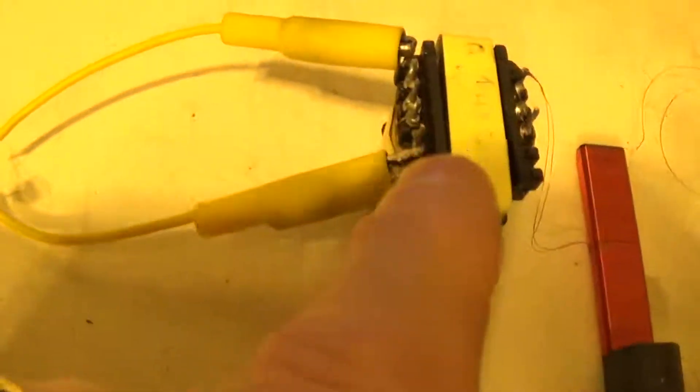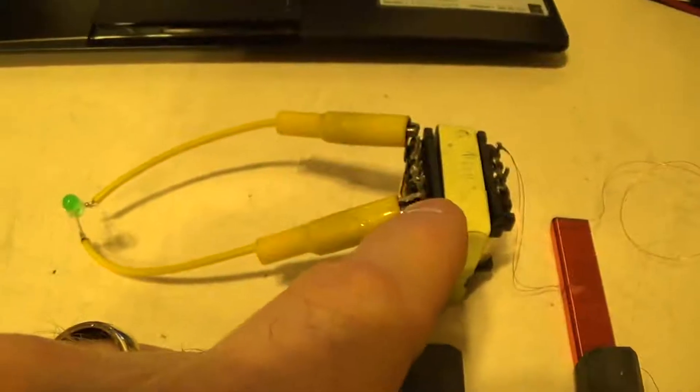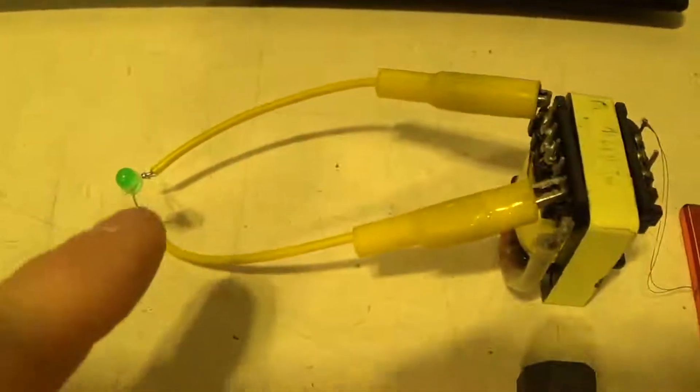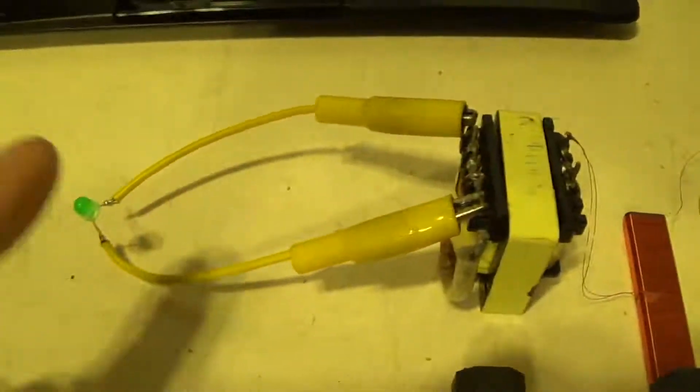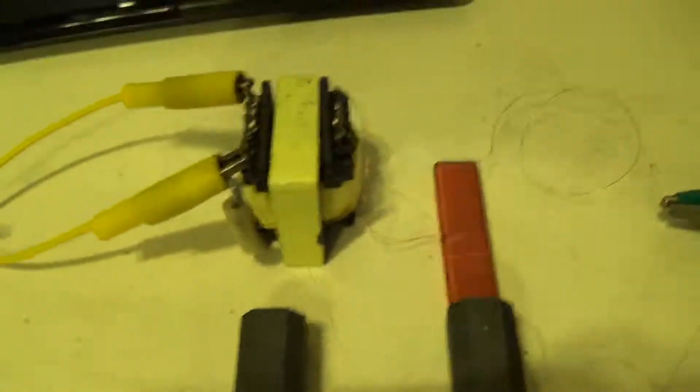So here on the output side, which is that switch mode power supply ferrite transformer, I've connected a LED instead of that bulb. The LED is very easy to see when it comes on. So that's a little better.